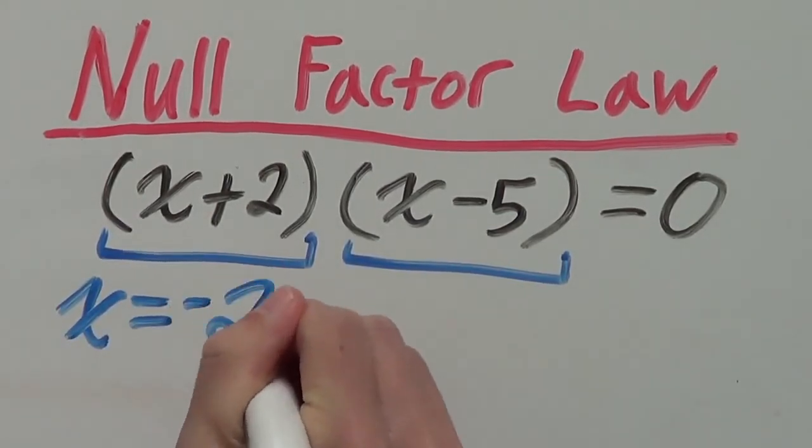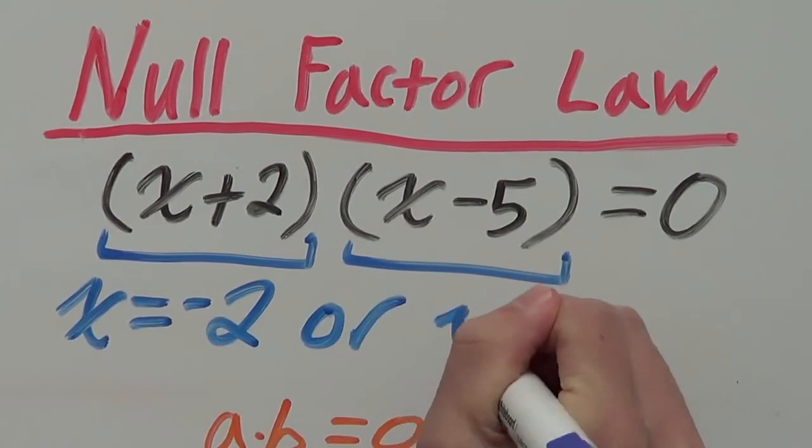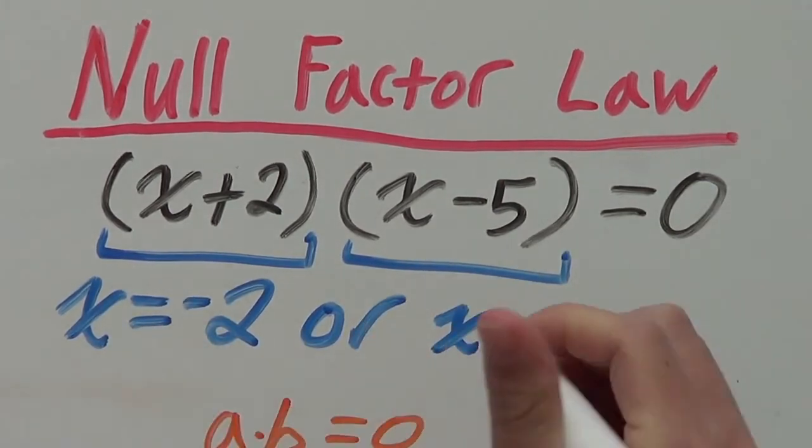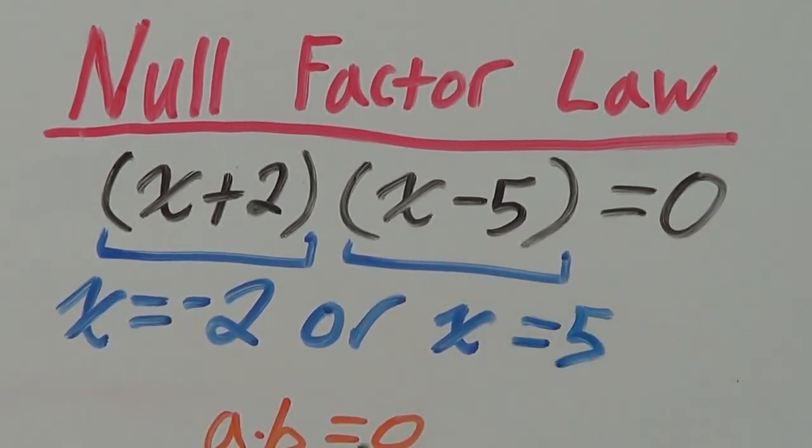x is equal to negative two, or x can also be equal to five because here, if x is five, five minus five is zero.